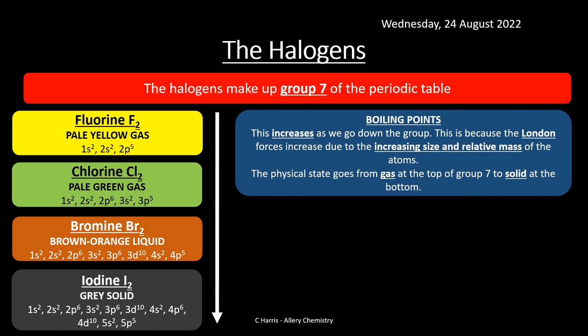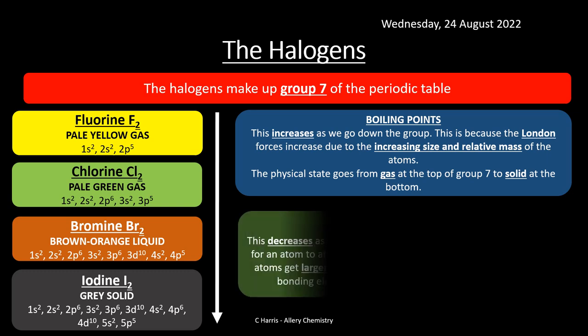As we go down the group, boiling points increase because van der Waals forces — also called London forces — increase due to the increasing relative mass of the atoms. The physical state goes from gas at the top of group 7, which is fluorine, all the way down to solid at the bottom. As the atom gets bigger, the mass gets bigger, the intermolecular forces increase, and the physical state becomes increasingly more solid.